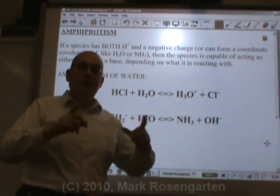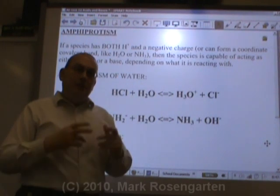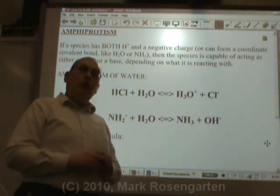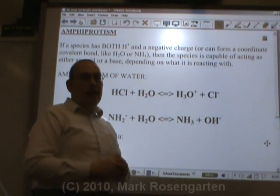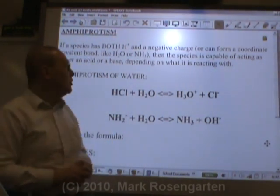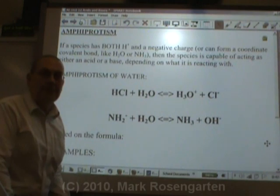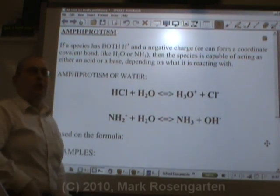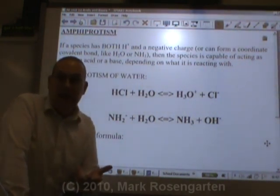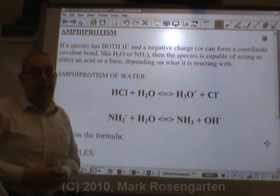Now that you know how to tell a Brønsted-Lowry acid and base depending on what it does in a formula, did you know that there are some substances that can act as either an acid or a base? These are called amphiprotic substances — substances that can either give off hydrogen and act like an acid, or pick up hydrogen and act like a base.